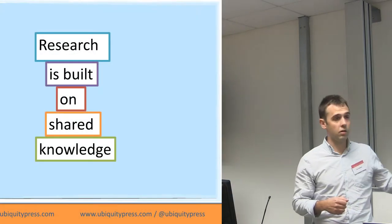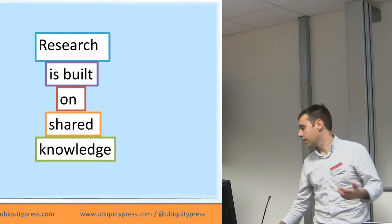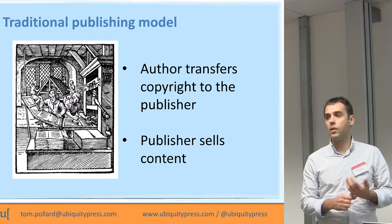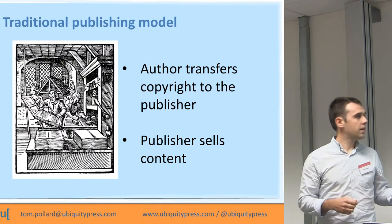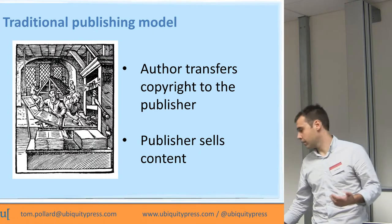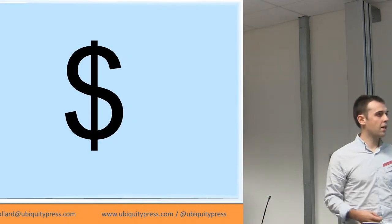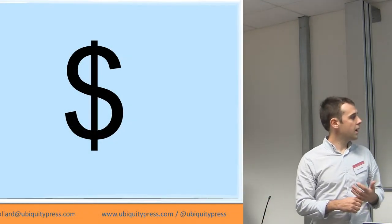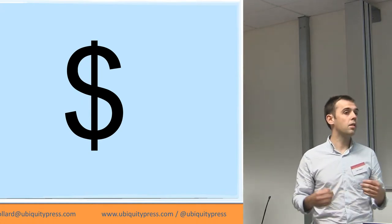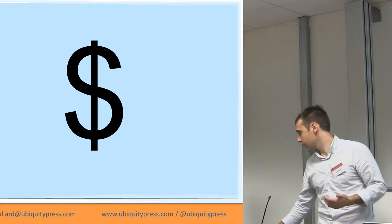Progress in research is built on shared knowledge, so the knowledge needs to be out there. With the traditional publishing model, the author transfers copyright to the publisher, and then the publisher sells the content. That may have worked with old technology, but it doesn't suit the technology we have today. It means that if you don't have the money — if you're in a developing country — you can't access the content, and I think it's pretty unethical to stop people accessing content when there's no good reason to do so.